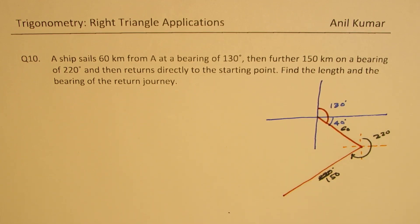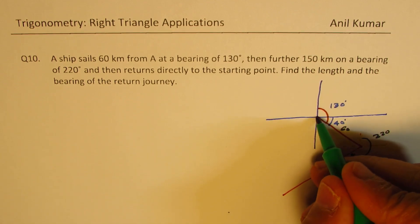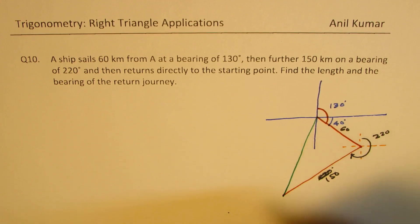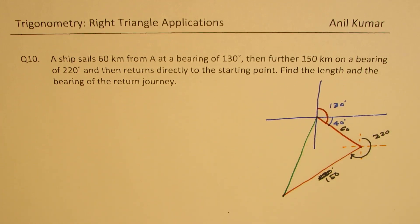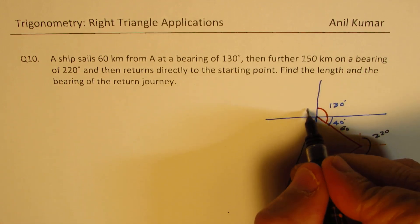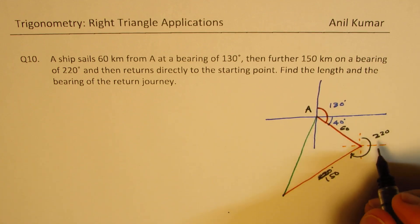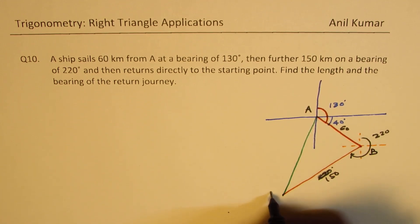Now, we have to figure out how will this return, right? So it has to return to the starting point. That's the diagram. Let's call this point as A. Now this is B for us and that is C.